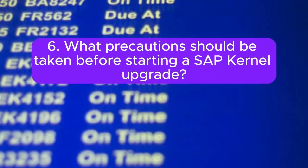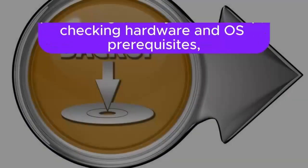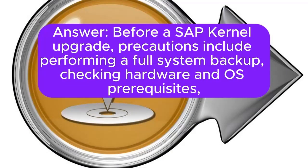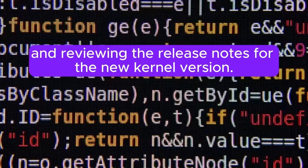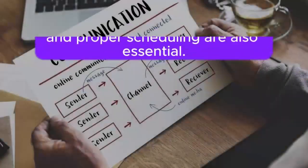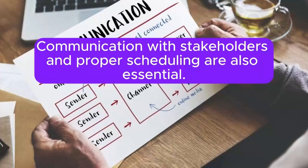6. What precautions should be taken before starting a SAP kernel upgrade? Before a SAP kernel upgrade, precautions include performing a full system backup, checking hardware and OS prerequisites, and reviewing the release notes for the new kernel version. Communication with stakeholders and proper scheduling are also essential.